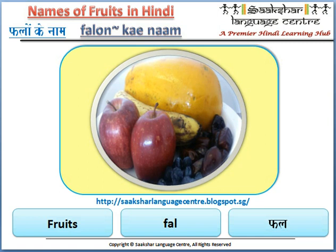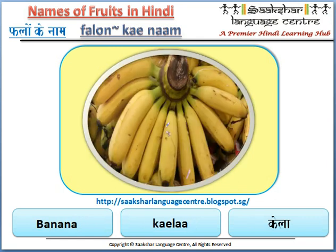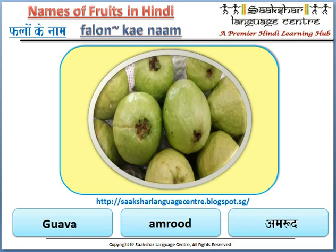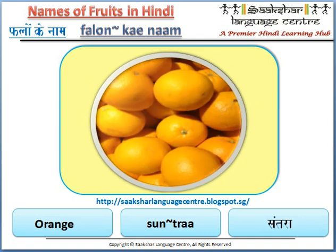Fruits means fal. Pineapple is ananas. Banana is kela. Apple is seve. Guava is amrood. Papaya is papita. Orange is santra.